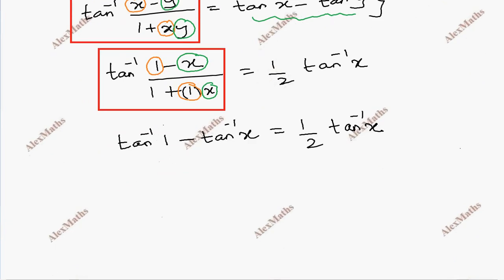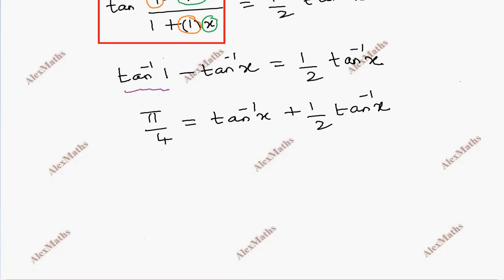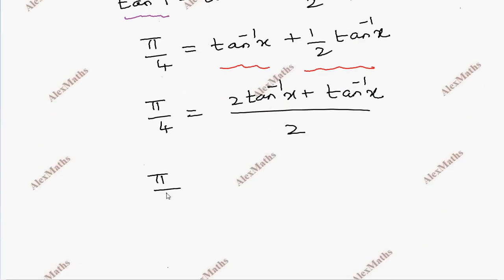Since tan inverse 1 is pi by 4, we have pi by 4 equals tan inverse x plus half tan inverse x. Taking the LCM, that gives pi by 4 equals 3 tan inverse x divided by 2.